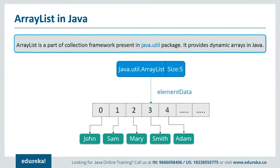Now let's see what is ArrayList. ArrayList is a part of the collection framework and is the implementation of the List interface where elements can be dynamically added or removed from the list. Also, the size of the list is increased dynamically if elements are added more than the initial size. Though it may be slower than standard arrays, it can be very helpful in programs where lots of manipulation in the array is required.